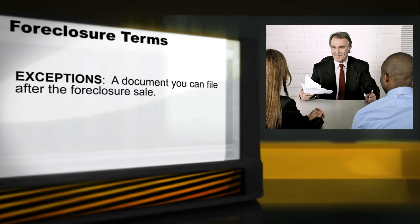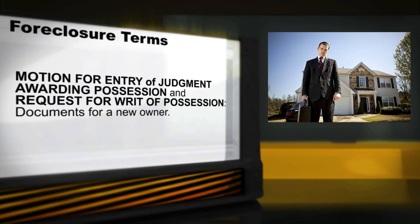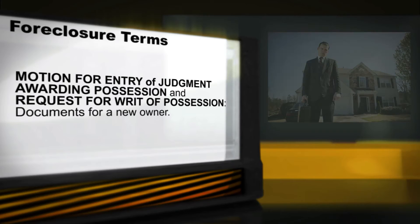Once the foreclosure process is nearly complete and the court has approved the lender's request to sell the house, you can file a document referred to as exceptions after the sale. Finally, a motion for entry of judgment awarding possession and a request for writ of possession are legal documents that allow a new owner to take possession of your house. The purchaser of the house files these documents after the court approves the foreclosure sale.